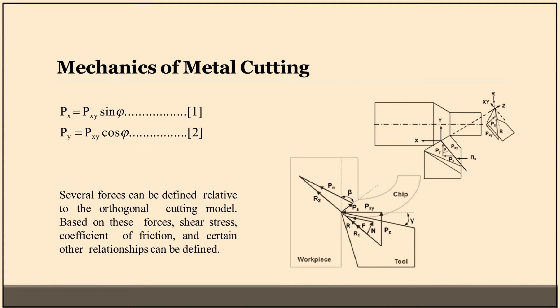Mechanics of metal cutting. There are two pictures and from the pictures we can write Px is equal to Pxy sine phi, equation one. Equation two: Py is equal to Pxy cos phi. Several forces can be defined relative to the orthogonal cutting model. Based on these forces, shear stress, coefficient of friction, and certain other relationships can be defined.